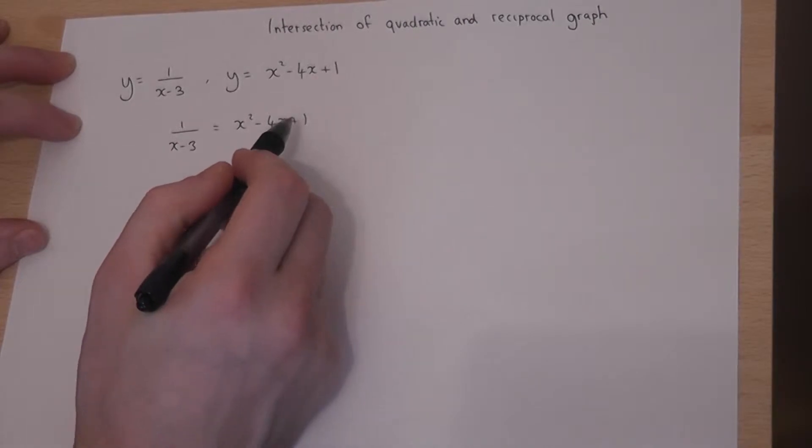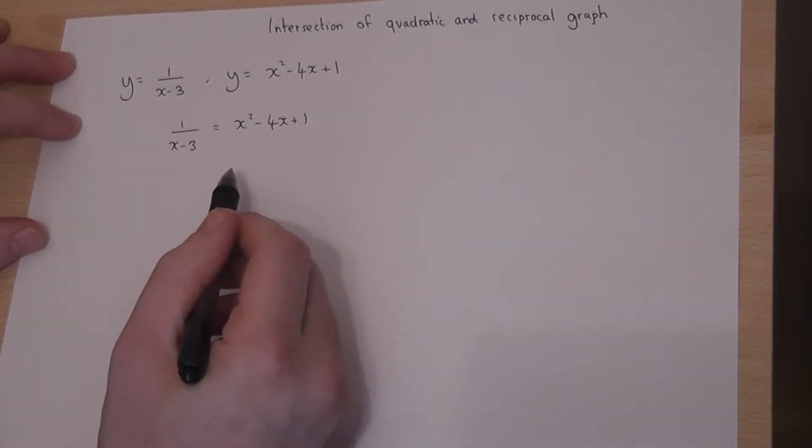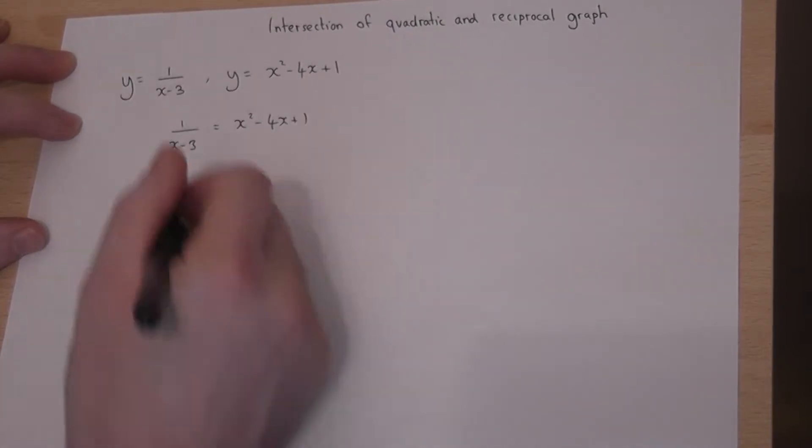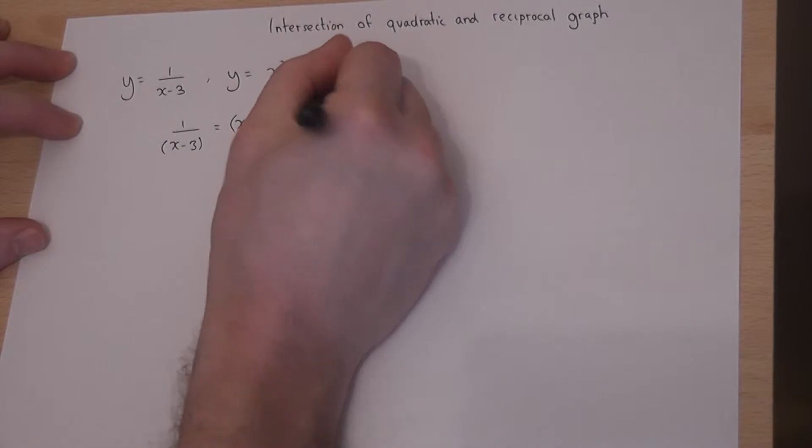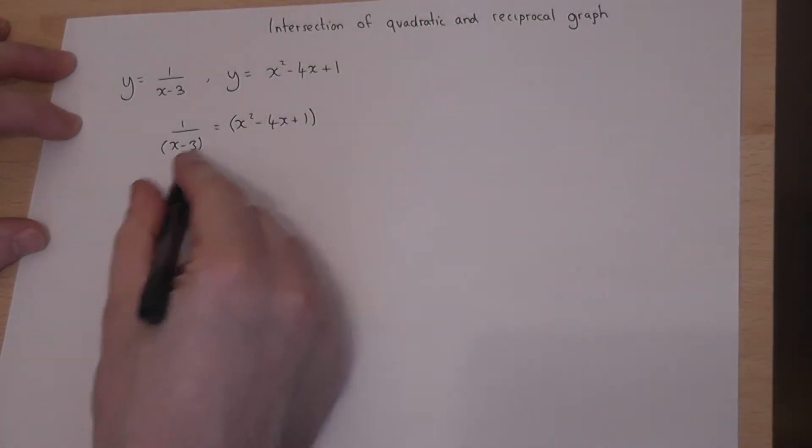So therefore I need to solve where these two equations are equal, i.e. solve this equation. So if I put brackets around the bottom and the top like so and then times up by (x-3),